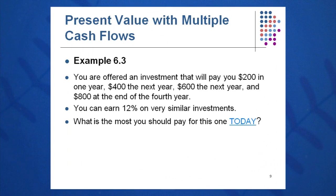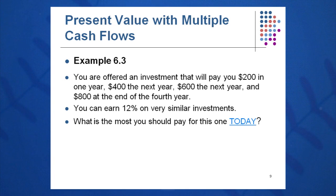Here's an example. You're offered an investment that will pay $200 at the end of year one, $400 at the end of year two, $600 at the end of year three, and $800 at the end of year four — so $200, $400, $600, $800 on the timeline, with nothing in the bank today. You can earn 12% on similar investments. What is the most you should pay for this one today?